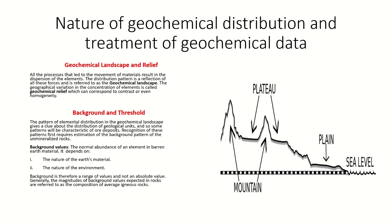Before understanding the treatment of geochemical data, we have to understand the nature of geochemical distribution in earth materials. We know the earth's landscape is shaped by a number of processes — tectonic processes, and processes which operate on the surface of the earth such as weathering, erosion, and deposition. These processes produce a distinct geomorphic landscape. Similarly, the process of dispersion — primary processes and secondary processes — causes the movement of earth materials and results in the dispersion of elements. The pattern which emerges because of these processes has to be a reflection of all these processes.